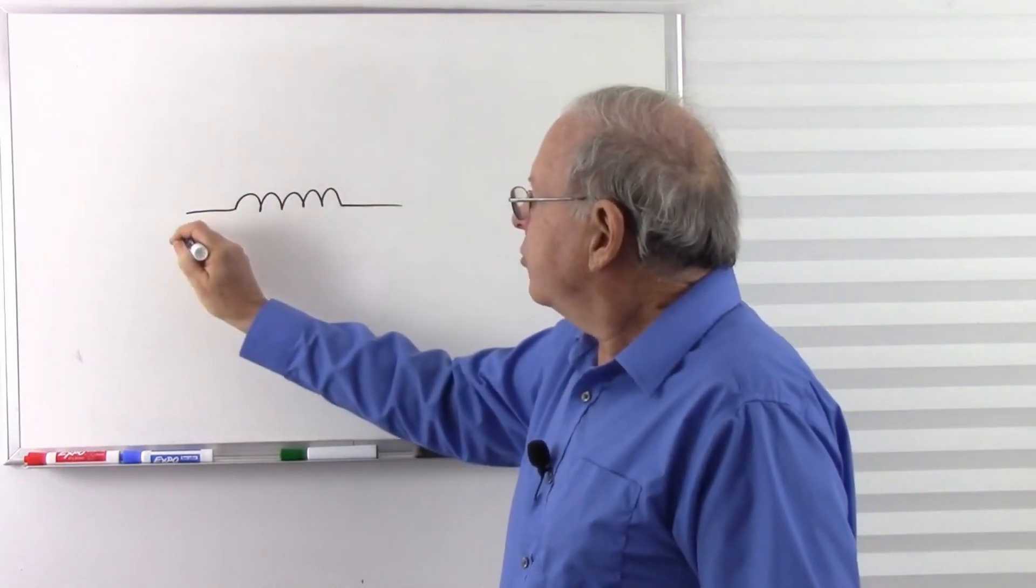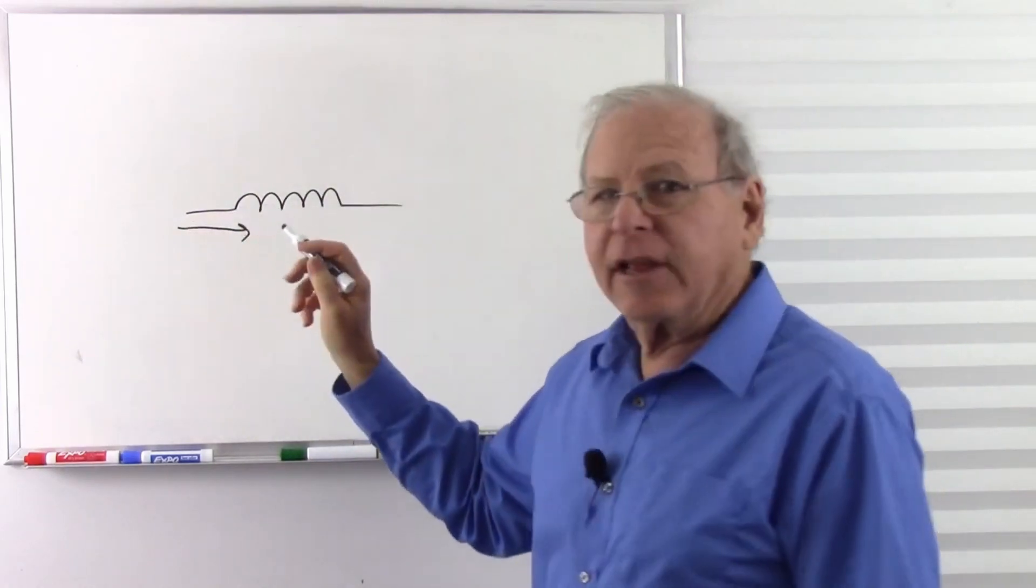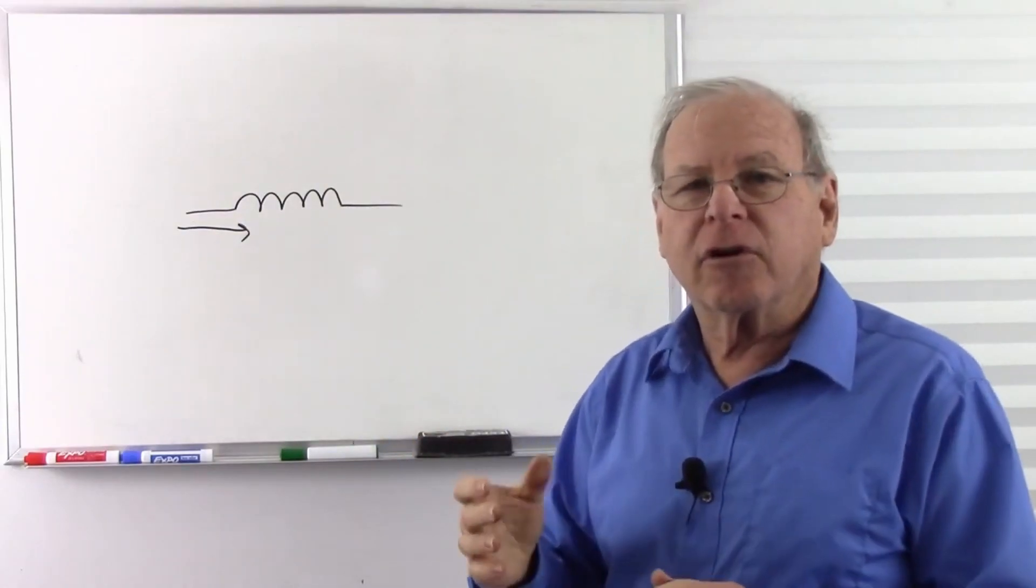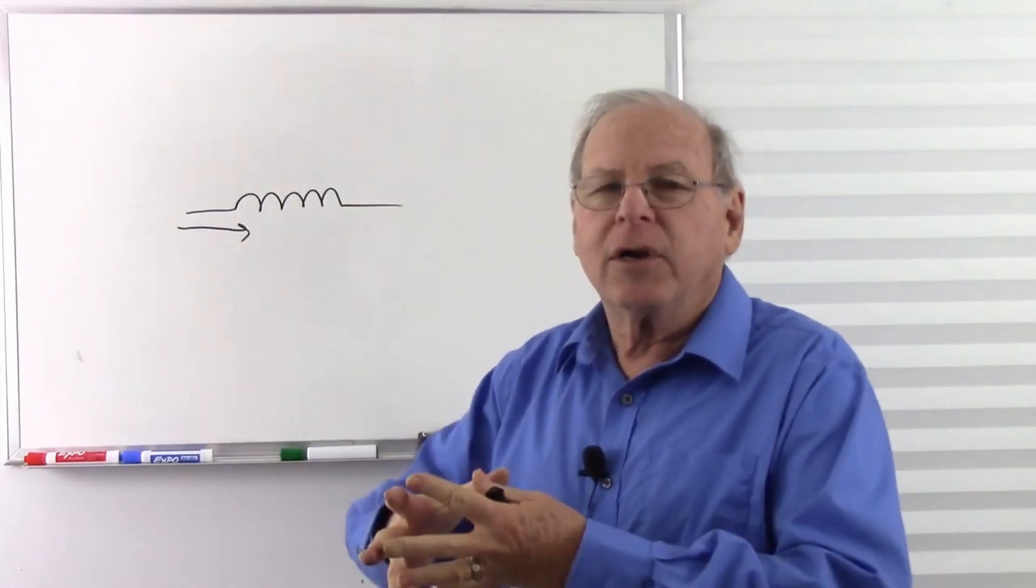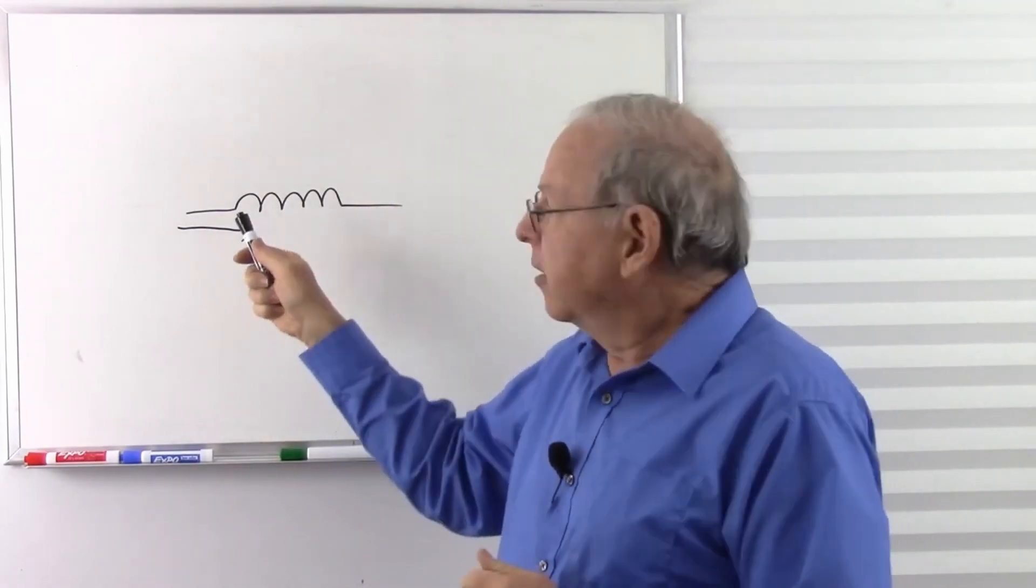And if we push a current of electricity into that coil of wire, what happens? When you have electrical current, you have a magnetic field. So as we push electricity into that wire, we get a magnetic field that builds.